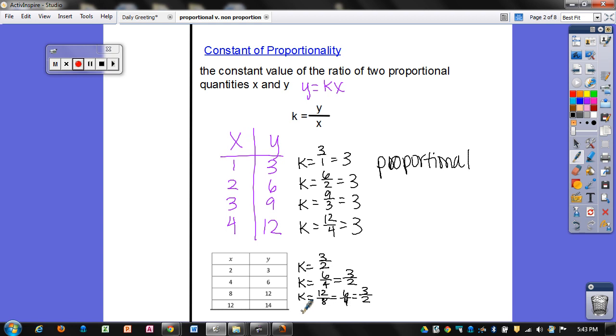And then when I take this last one, 14 divided by 12, when I reduce this I get 7 over 6, which is not the same thing as 3 halves. Even though these three are equal, this last one is not. So this is not a proportional relationship. It's non-proportional.